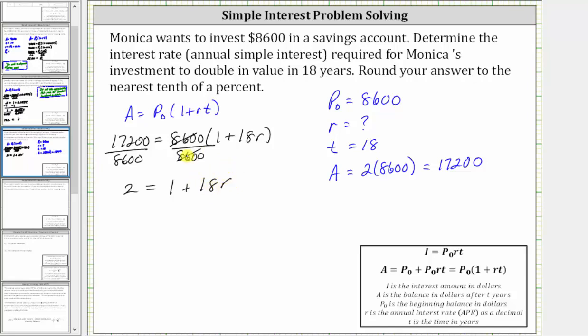Next, we isolate 18R by subtracting one on both sides. Simplifying, two minus one is one. On the right, one minus one is zero, leaving us with just 18R.